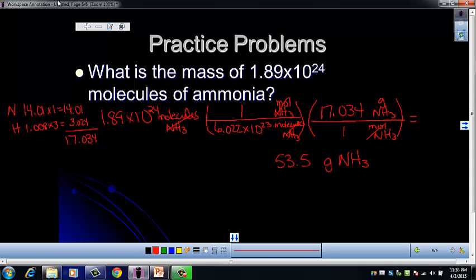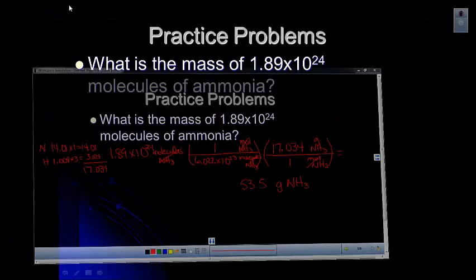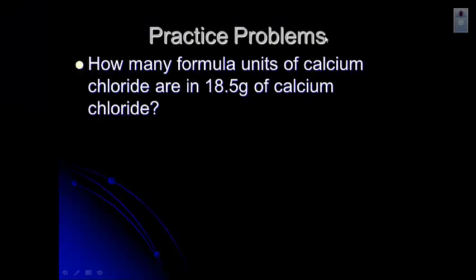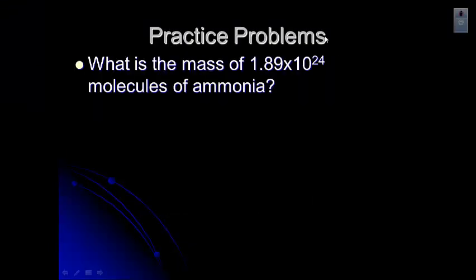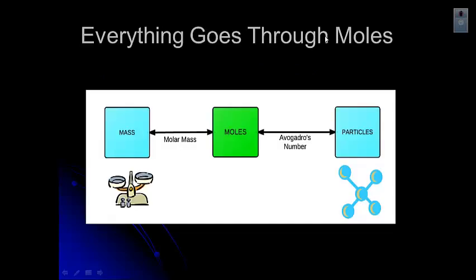Let's look at the flow chart again. We started with particles — molecules of ammonia — went from molecules to moles using Avogadro's number, then from moles to mass using molar mass.